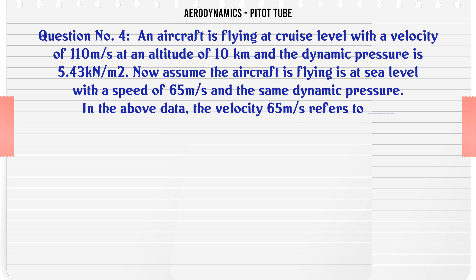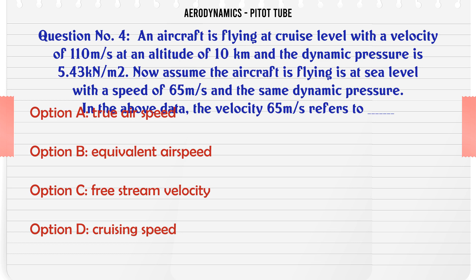An aircraft is flying at cruise level with a velocity of 110 m/s at an altitude of 10 km and the dynamic pressure is 5.43 kPa. Now assume the aircraft is flying at sea level with a speed of 65 m/s and the same dynamic pressure. In the above data the velocity 65 m/s refers to A.